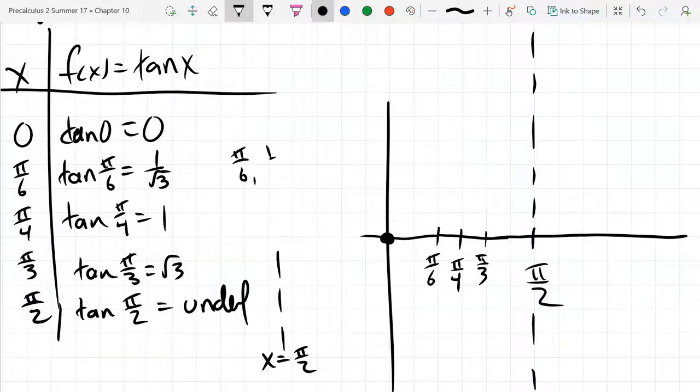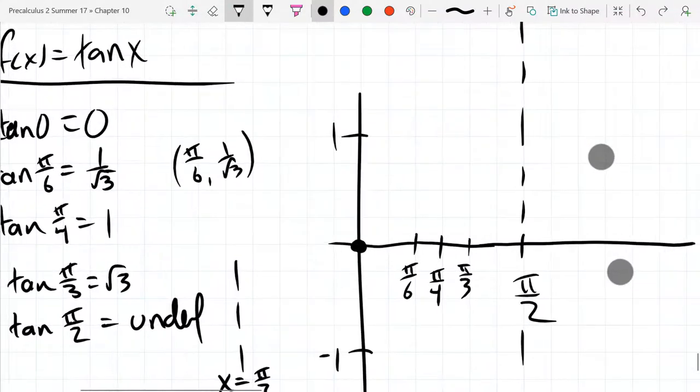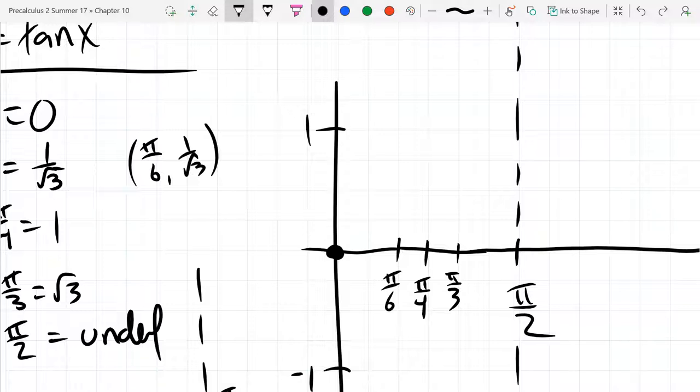So we got pi over six comma one over square root three. Now instead of getting out a calculator and estimating. So this looks like it's one and negative one. I'm just going to arbitrarily pick where one divided by square root three is. It's going to be less than one because we're taking one and dividing by a number bigger than one.